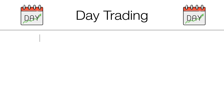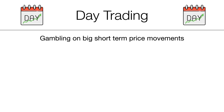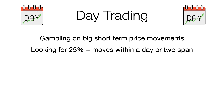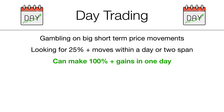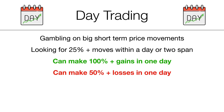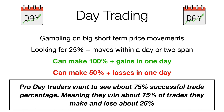Essentially, day trading is gambling on big short-term price movements. What you're looking for is 25% plus moves within a day or two span. People can make 100% plus gains in one day, but you can also make 50% plus losses in one day. Pro day traders want to see about a 75% successful trade percentage — winning about 75% of trades and losing about 25%.